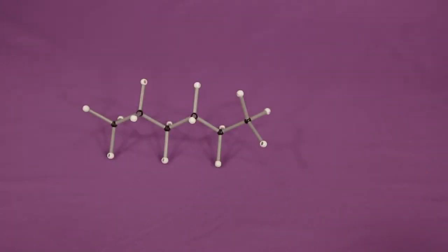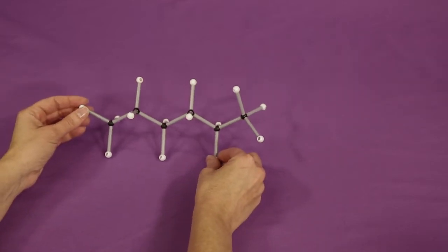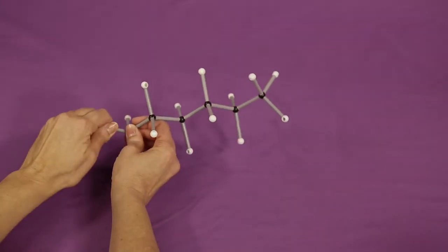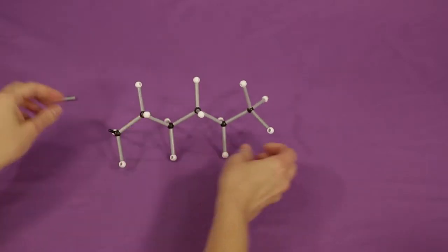Now let's make a cyclohexane. Begin with a hexane molecule from the first alkane you made. Remove one hydrogen from each end of the molecule.